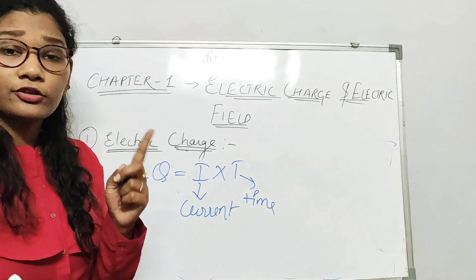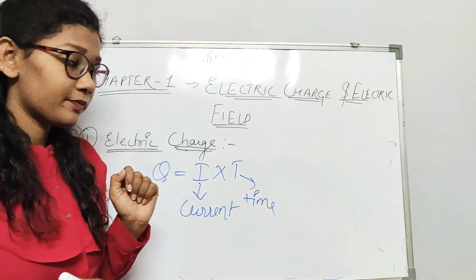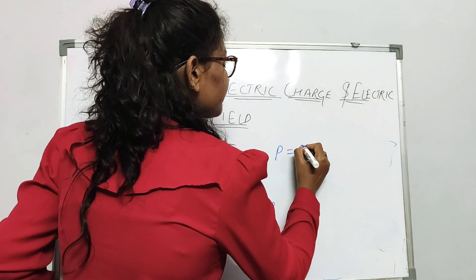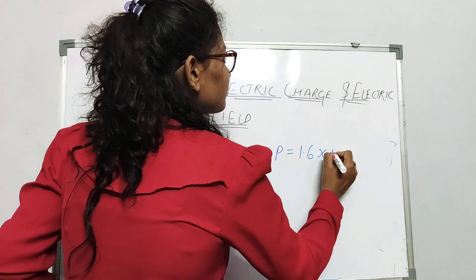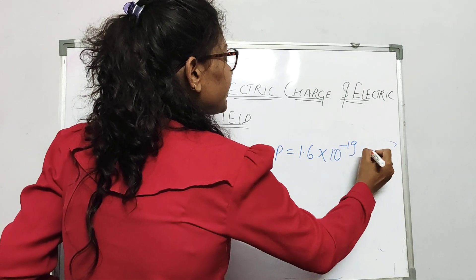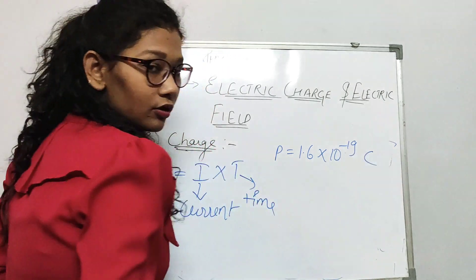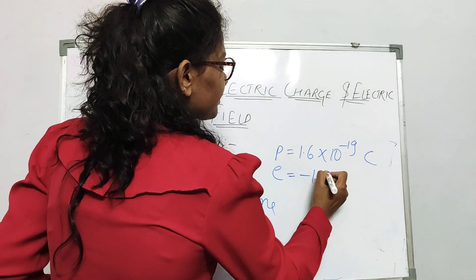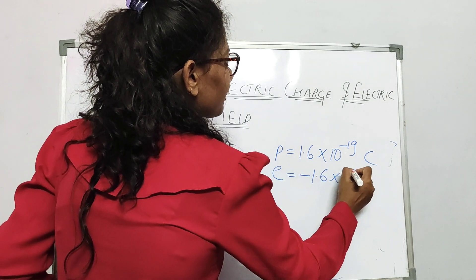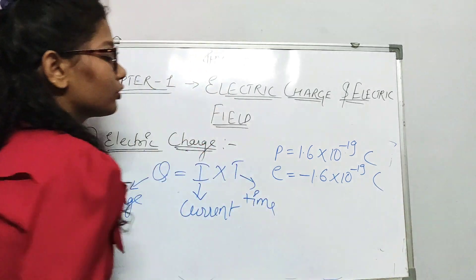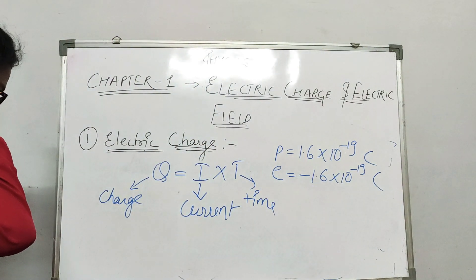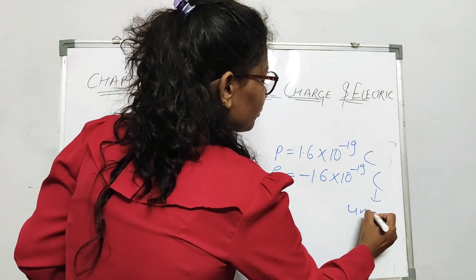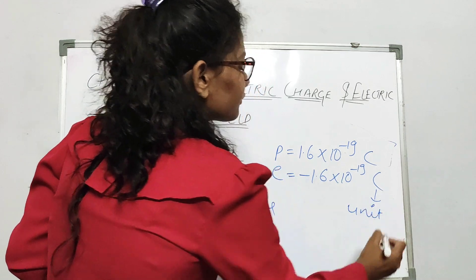The charge of a proton is 1.6 into 10 to the power minus 19 Coulomb, whereas for an electron it is minus 1.6 into 10 to the power minus 19 Coulomb. Coulomb is the unit of charge.